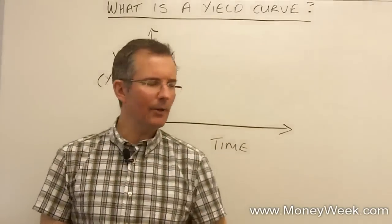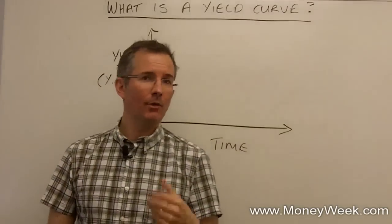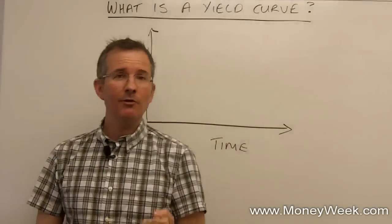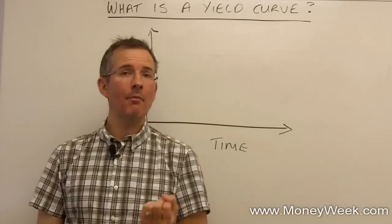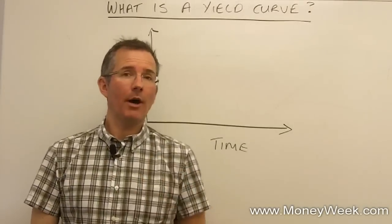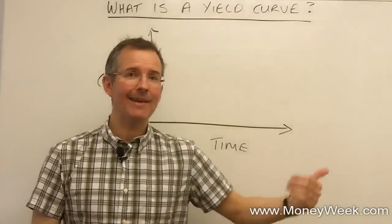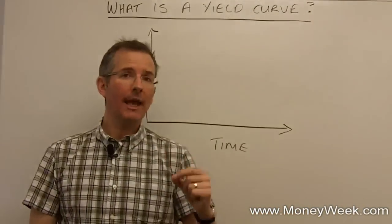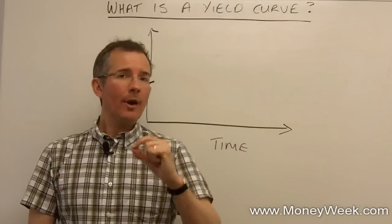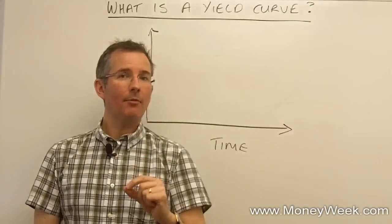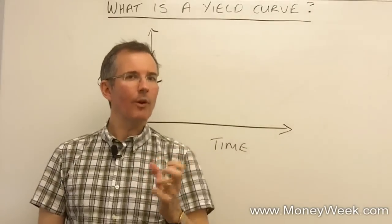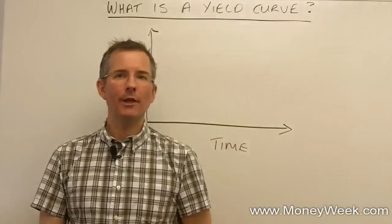And here's the point about a yield curve. The assumption is that if you invest with the British government or the American government, default risk is close to zero. You're not expecting the government to go bust. So it doesn't matter what you buy. One year, five year, ten year, twenty year. You're going to get your money back. So the question then is what reward do you want for tying your money up for longer? That's really what we're sort of getting at as a basic picture of a yield curve.